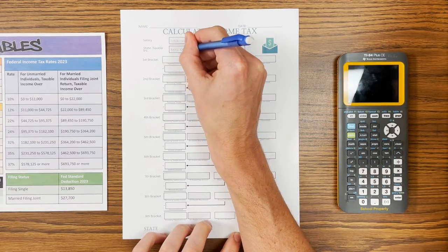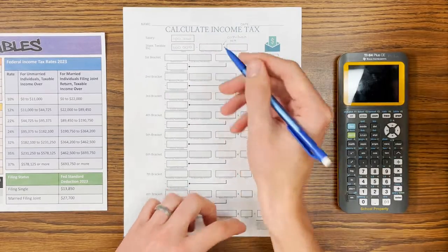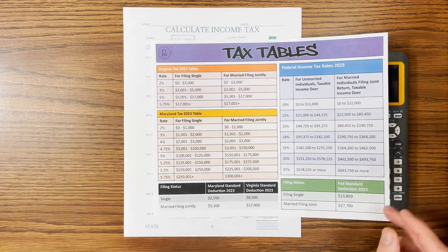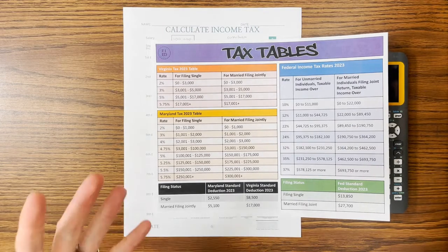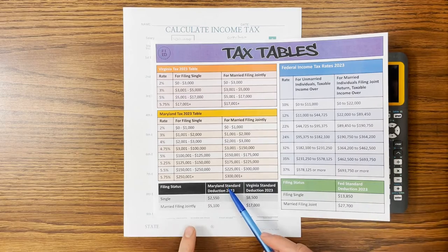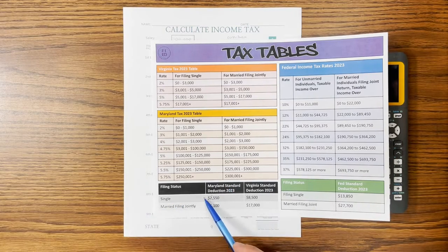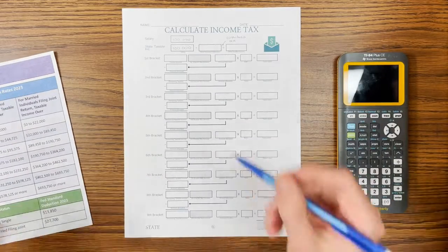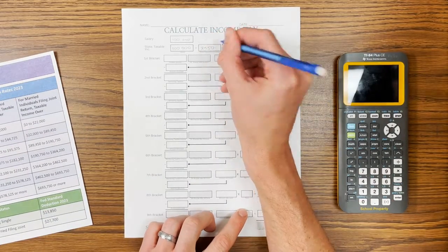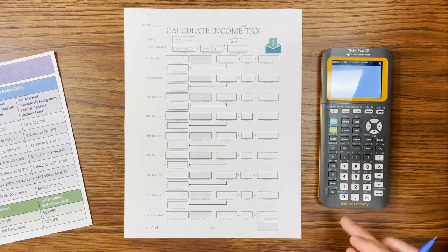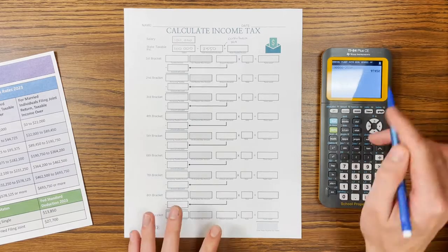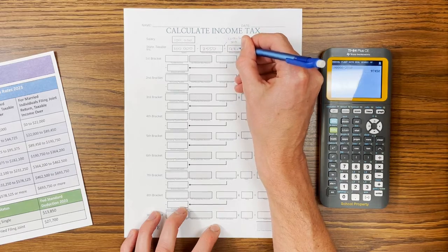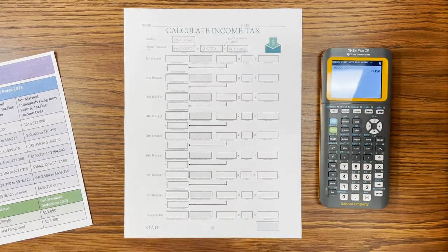We've got a salary of $100,000. The standard deduction for Maryland — if you have my tax tables available, you'll look for the one with Maryland on it; if not, you can look it up on Google. I'd recommend the NerdWallet site, or go directly to maryland.gov. The Maryland standard deduction for a single person is $2,550. So we get to deduct $2,550 from our income, and that becomes our taxable income — what Maryland is actually going to tax us on. Subtracting those two numbers gives us $97,450 in state taxable income.